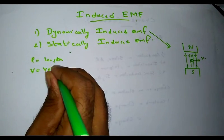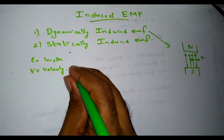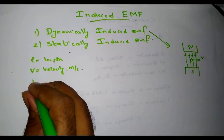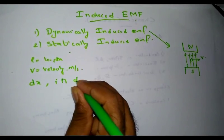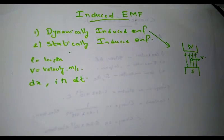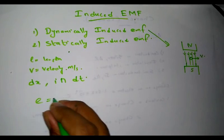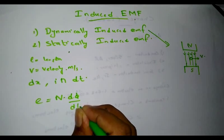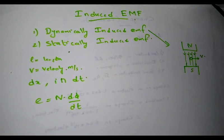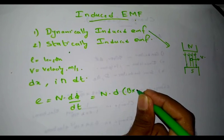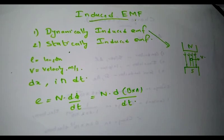v is the velocity in meters per second at which I am moving the conductor. Let the conductor be moved by a small distance dx in time dt. According to Faraday's law, dynamically induced EMF E is equal to N into dΦ/dt. We can represent flux Φ as B into A, so E equals N into d(B·A)/dt. Flux can be expressed in terms of flux density B and area A.